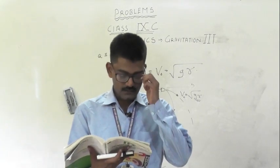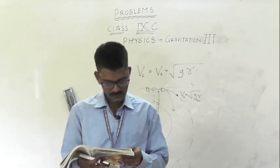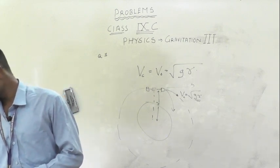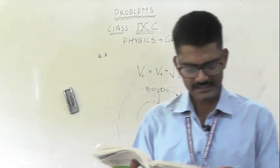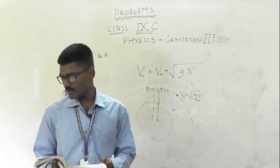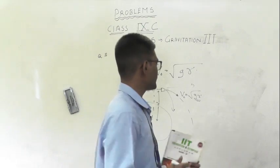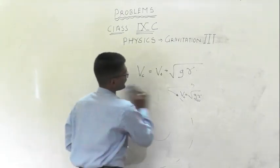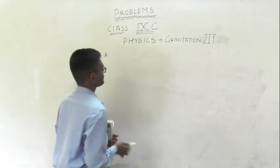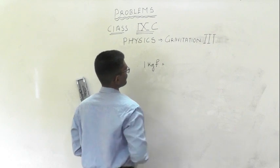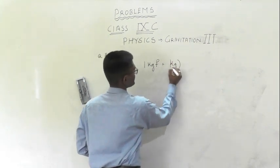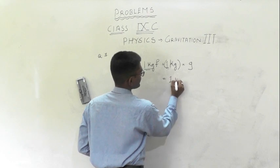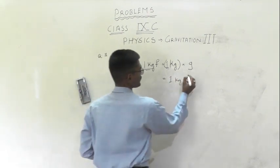Remember this formula: Vo equals under root of g·r — there is no mass, so it is independent of mass. The mass of the body can never be different — mass is constant everywhere. Weight is changing, but mass will not change. So if someone asks, the answer is: mass of the body can never be different.